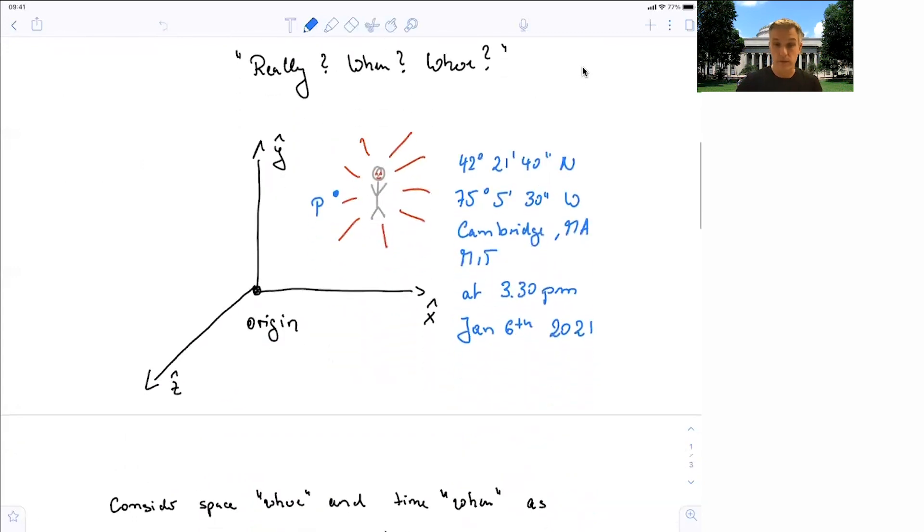We can then draw a reference frame, as I did here, with an origin, with an x-coordinate, a y-coordinate, and a z-coordinate. And in this picture, we have a spot defined for the event. And we need to also have a fourth coordinate for this, the time, in order to describe when the event actually happened. And I did this here in some coordinates.